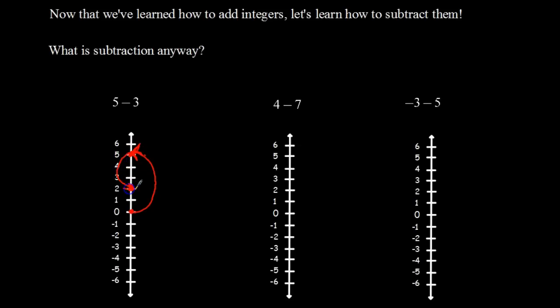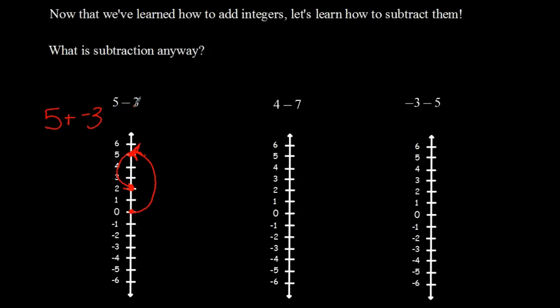Going up five and then down three puts me back at two. Another way of saying this: go up five and then go down three. That's the same result. I'll come back to these in a moment to show a second method. I don't expect you to do both ways, but I want you to pick one that works for you.